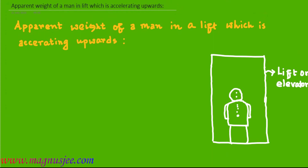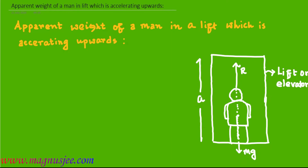We are finding the apparent weight of a man in a lift which is accelerating upwards. In the diagram, we have a lift or elevator. Mg is the actual weight or true weight of a man standing inside the lift, and the lift is moving upwards with an acceleration A. R is the normal reaction on the man applied by the floor of the lift. A is the acceleration of the lift in the vertically upward direction.